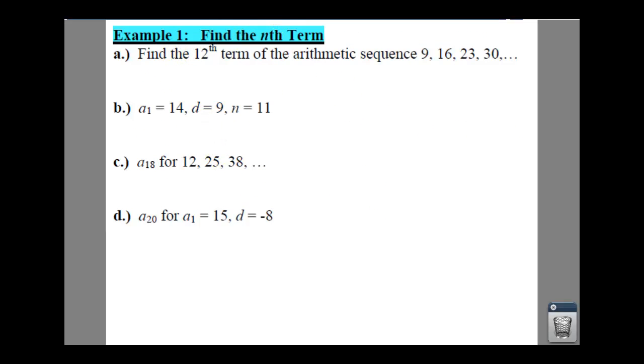So example 1 here, we're going to find our twelfth term of the sequence 9, 16, 23, and 30. So if we're going to use the formula of a sub n equals our a sub 1 plus n minus 1 times d, then what our a sub n is, that's your n, is going to be 12. Now we need to figure out what our a sub 1 is, which that is your first term of your sequence, which is 9.